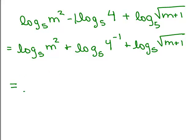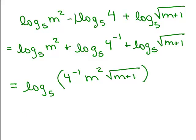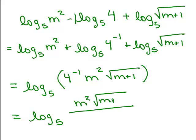So if I write it as a single log at this point, I can either at this point change this to 1/4. Remember 4^(-1) is 1/4, or I could leave it as 4^(-1) for now and multiply everything together. So I have m² times 4^(-1) times √(m + 1). I'm going to put the 4^(-1) first because we usually write the coefficient out in front, times √(m + 1).